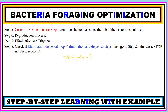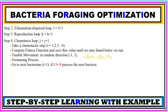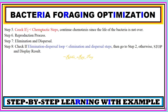We then check whether j is less than the chemotactic step. Here j is the chemotaxis loop counter. If this condition is true, we continue the chemotaxis since the life of the bacteria is not over. After that, we perform the reproduction process and then elimination and dispersal. We check whether the elimination-dispersal loop counter is less than the elimination-dispersal steps — this is the stopping criteria. When matched, we stop; otherwise, we repeat steps 2 to 7. Once stopping criteria is satisfied, stop and display the result.